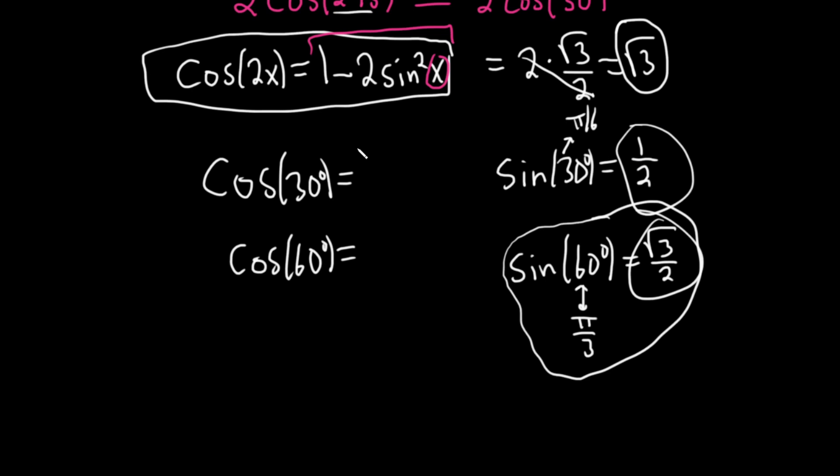So cosine of 60 is 1 half, and cosine of 30 has to be square root of 3 over 2. It's a cheap trick to memorize all these trig function values: cosine of 30, cosine of 60, sine of 30, sine of 60, or pi over 3 and pi over 6. You can memorize all of that by memorizing just one.